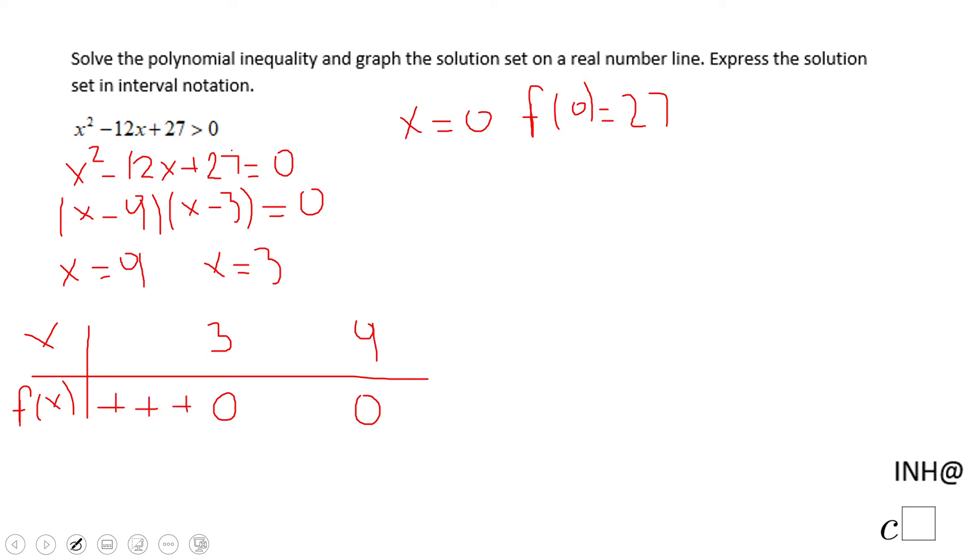If we go to four, it's better to use this factored form. We have four minus nine, which is negative five, times four minus three, which is one. Negative five times one is going to be a negative number, so here is going to be negative.